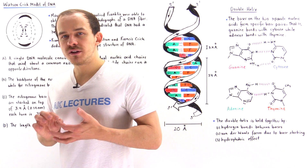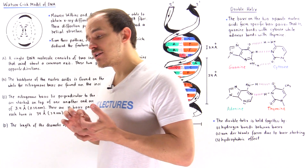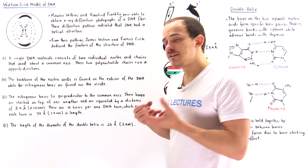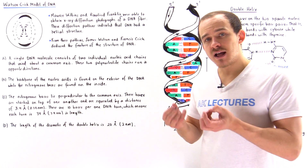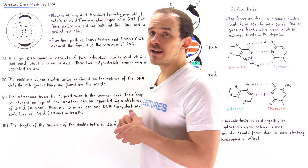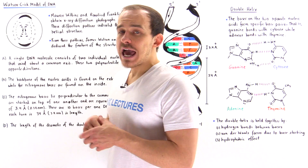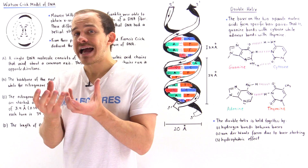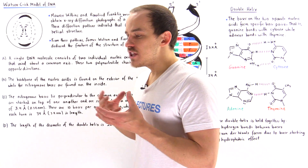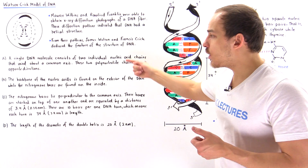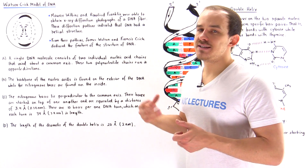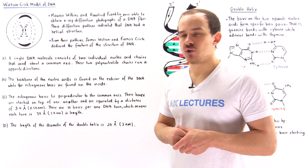What these four individuals essentially did is they were able to develop and study x-ray diffraction patterns of DNA fibers. And from these x-ray diffraction photographs, they were able to deduce the following four points about DNA molecules.